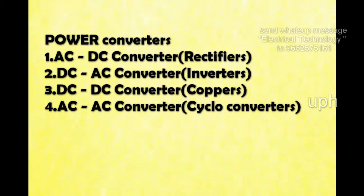AC to DC converter is a Rectifier. DC to AC converter is an Inverter. DC to DC converter is a Chopper. AC to AC converter is a Cyclo Converter.